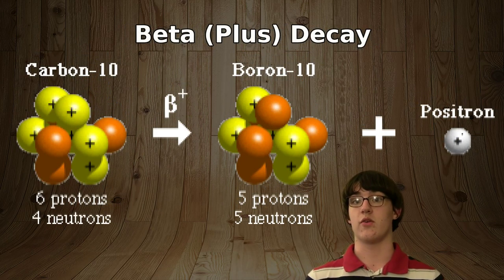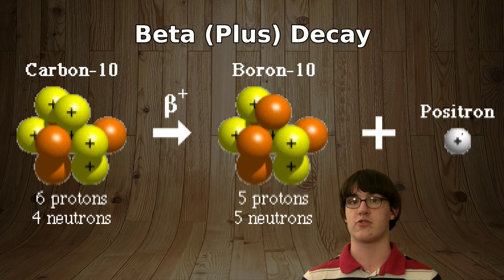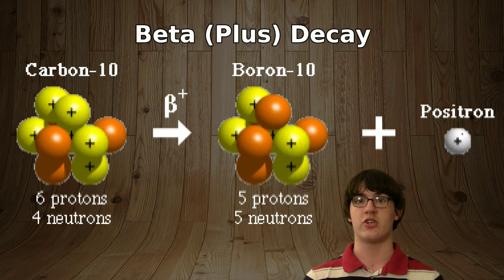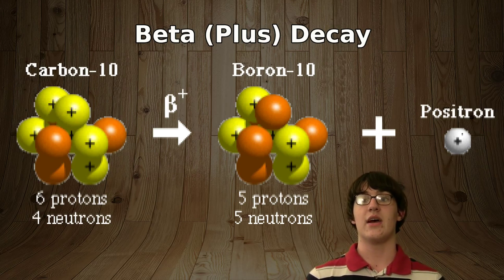Positron emission, or beta plus decay, is when a nucleus shoots off a positron. A positron is just like an electron, except it has a positive electrical charge. This form of decay happens when a proton turns into a neutron.